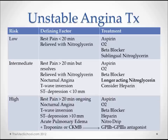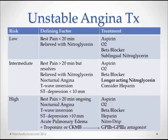This table goes over treating unstable angina at varying levels of risk. A low level of risk means we're not suspecting a recurrence of angina or MI — these are patients with resting pain under 20 minutes that is relieved by nitroglycerin. Those patients are treated with aspirin, oxygen, beta blockers, and sublingual nitroglycerin. If in addition to resting pain there's increased duration of pain, T wave inversion, or ST depression, we'll probably add a longer-acting nitroglycerin and possibly heparin.